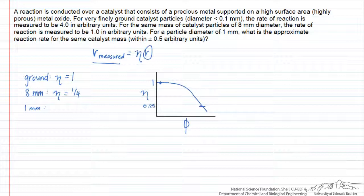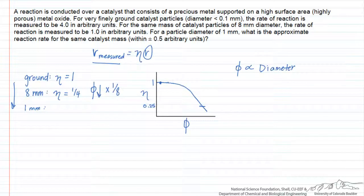The Thiele modulus is proportional, for a spherical catalyst particle, to the diameter of the particle. So in going from 8 millimeter to 1 millimeter catalyst particles, the Thiele modulus changes by a factor of 1/8 — it goes down by a factor of 8. We can read this off a plot; in most textbooks there is a plot of effectiveness factor versus Thiele modulus, and we can read off that the Thiele modulus for the 8 mm spherical catalyst particle should be 4.